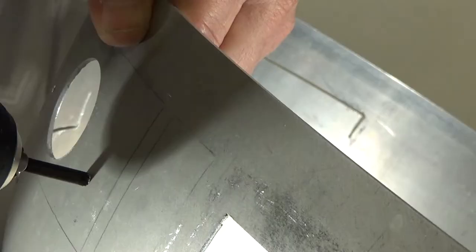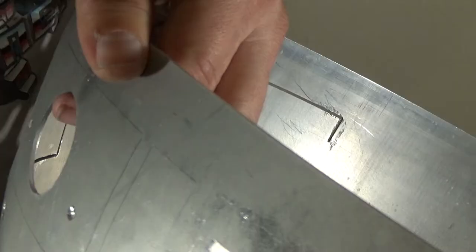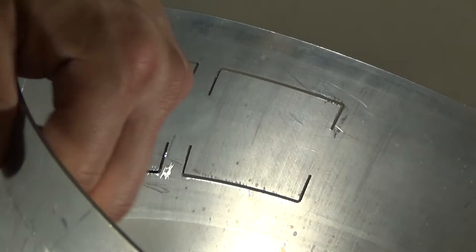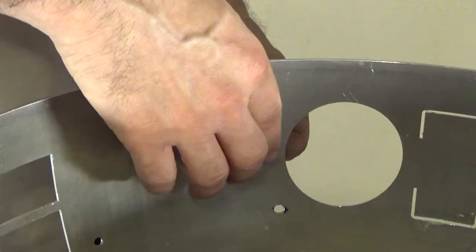This is a captive stud. It's an 18-8 stainless 440 thread and mine are half an inch long. Keep drilling until the captive stud fits just flush with the dome, because once we install our hardware we're going to pull that a little bit tighter and it'll hold the captive stud in place.